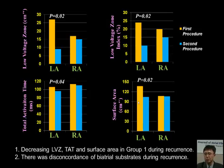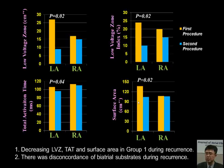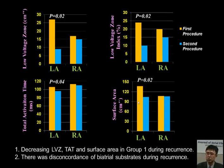Regarding other electrophysiological parameters in Group 1: the low-voltage zone decreased in the left atrium between procedures, the low-voltage zone index also decreased, total activation time decreased in the left atrium, and the surface area of the left atrium also decreased. There was a discordance of the biatrial substrate during recurrence — the right atrial electrical parameters remained similar between procedures.